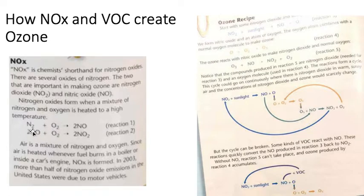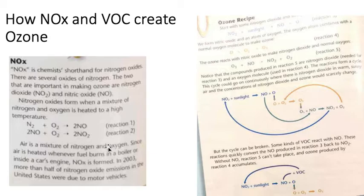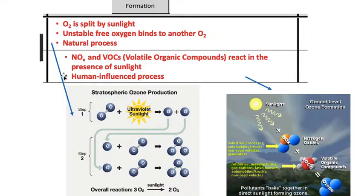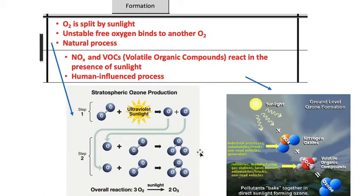Once we have nitric oxide, we can add some oxygen and we get nitrogen dioxide (NO2) as well. In 2003, more than half of the nitrogen oxide emissions in the United States were from motor vehicles. As for how ozone is formed: O2 molecules are diatomic, but if we add energy from sunlight — a photon — we can split that oxygen apart. We get two free, unstable oxygen atoms that then bind with an O2 molecule to give us our O3 molecules.